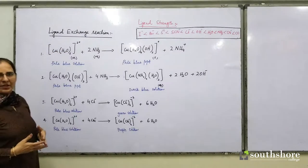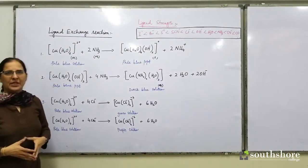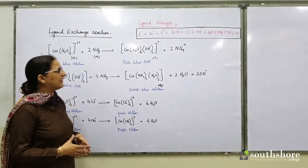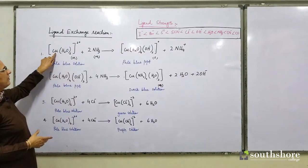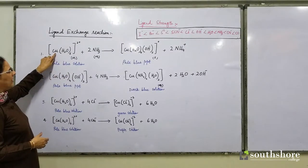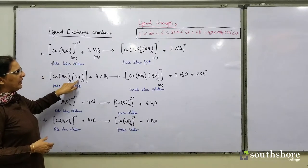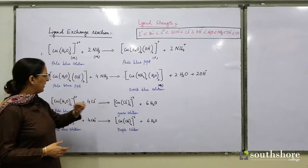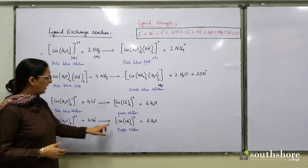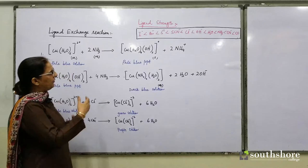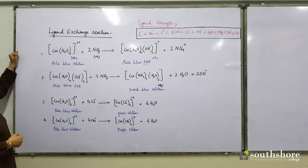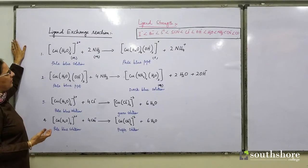In the previous class we studied what a ligand is. A ligand is a species — it can be a molecule or ion — which is able to form a dative bond with the central metal ion, your transition metal ion. So here you see water is acting as a ligand, OH⁻ ion is a ligand, ammonia is a ligand, chloride is acting as a ligand, and cyanide is acting as a ligand. If you look at these reactions, these are all ligand exchange reactions.